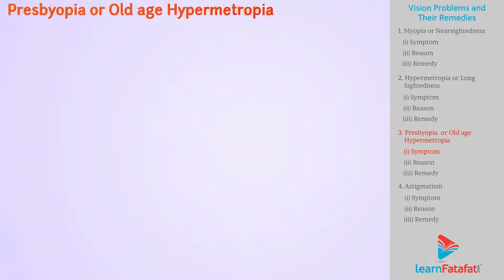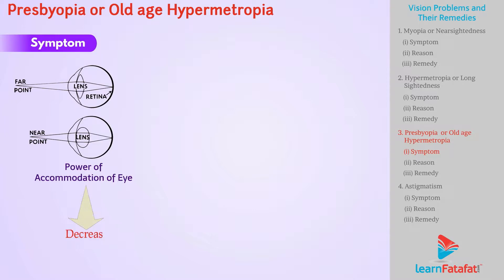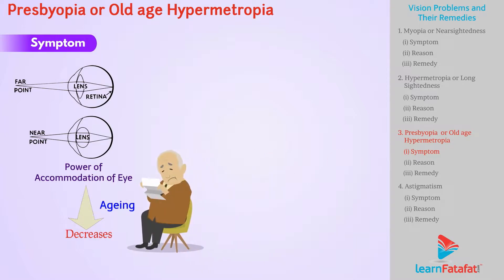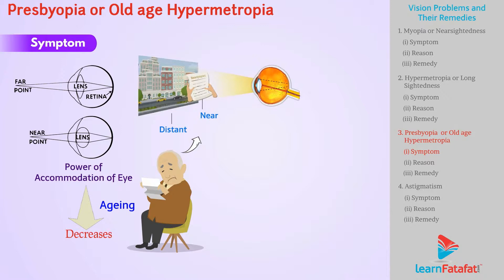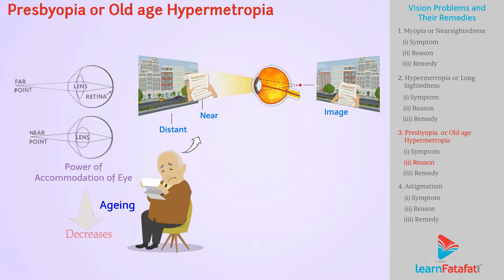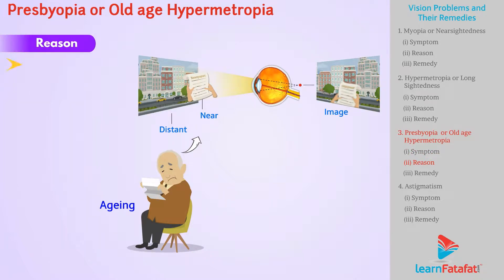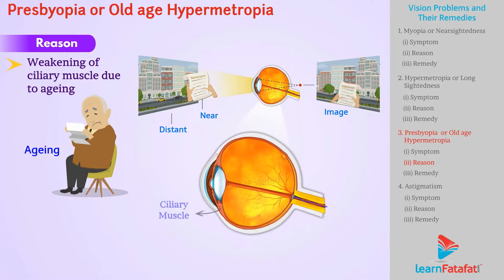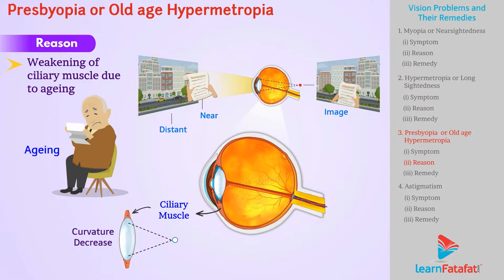Presbyopia or old-age hypermetropia. Symptom: the power of accommodation of the eye decreases with aging. As a result, old people cannot see nearby objects clearly. This defect is caused due to weakening of ciliary muscles due to aging, because of which the ciliary muscles do not contract sufficiently, and hence the curvature of the lens decreases and focal length increases.